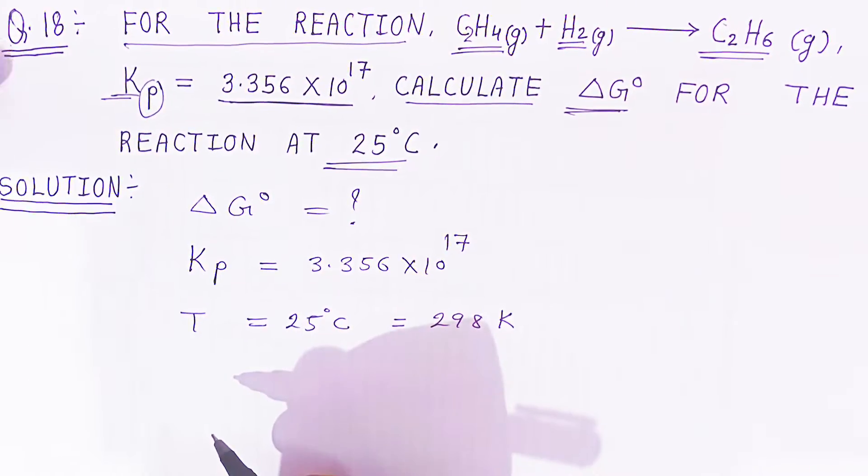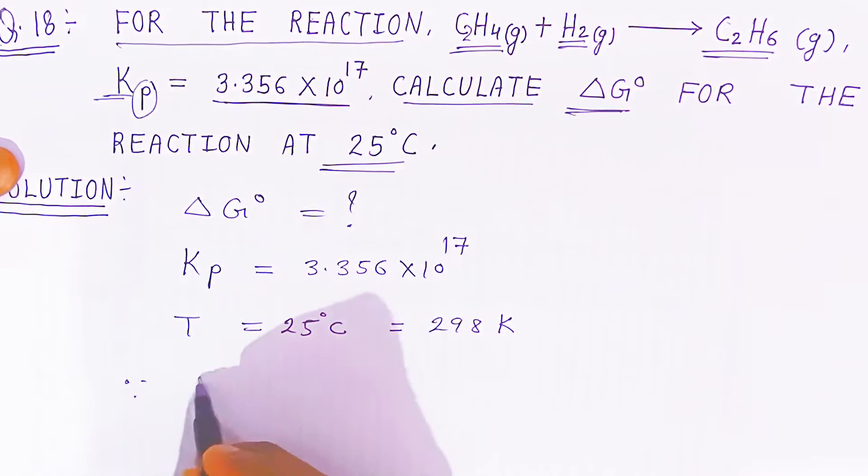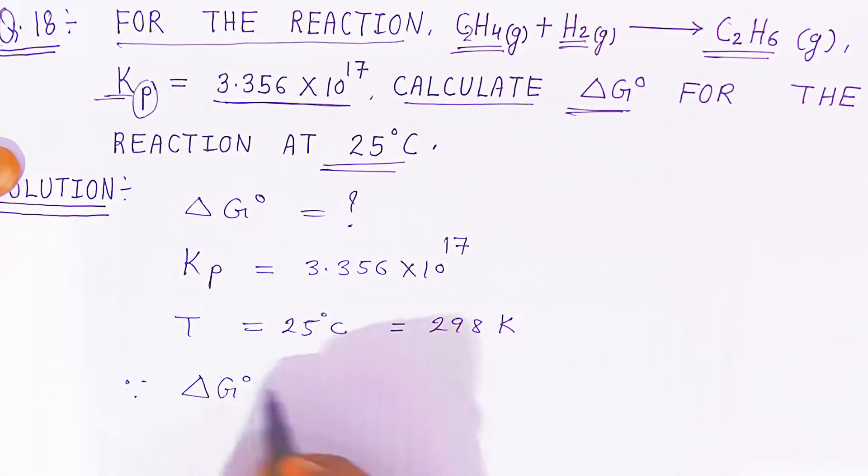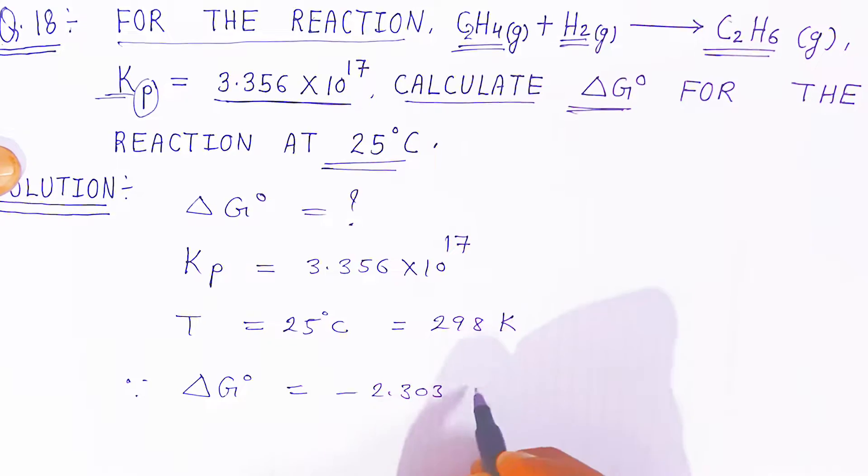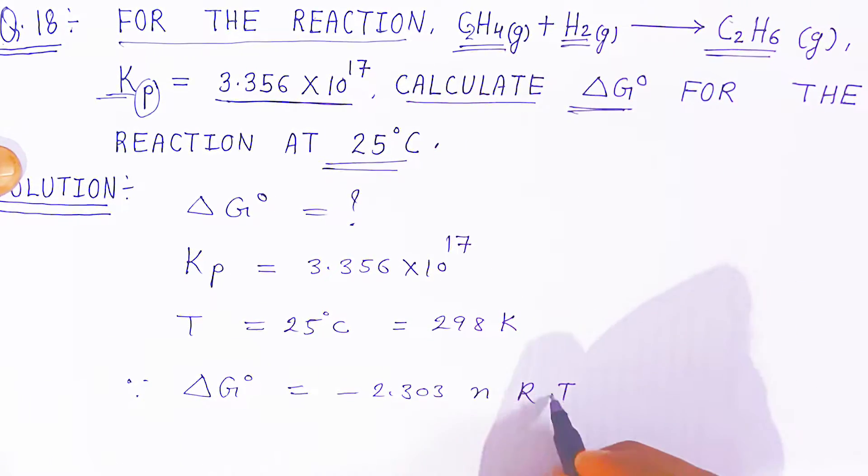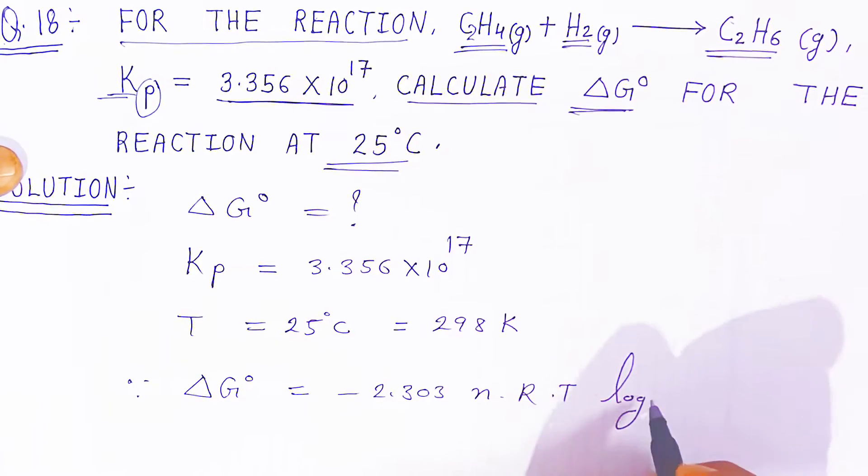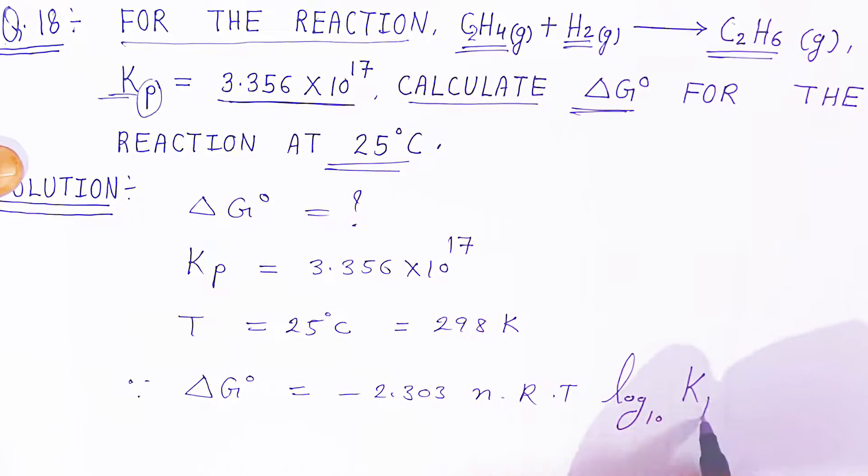Now, since you know the relation between temperature and equilibrium constant, you know the formula: Standard Gibbs energy is -2.303 × nRT × log₁₀(Kp).